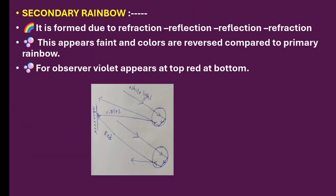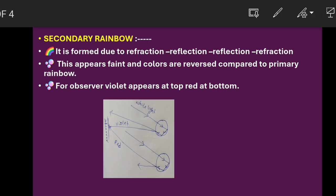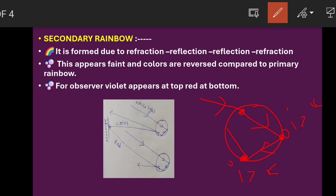Next is the secondary rainbow. Here, the light undergoes one refraction, then falls on the inner surface where the angle of incidence is greater than the critical angle, so it undergoes total internal reflection. Then it hits another inner surface again where the angle of incidence is greater than the critical angle, and undergoes reflection a second time. So there are two total internal reflections.